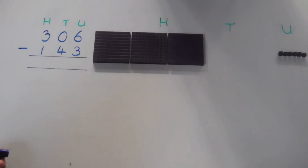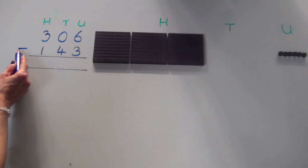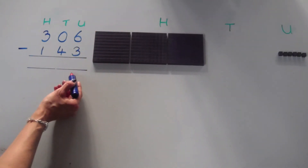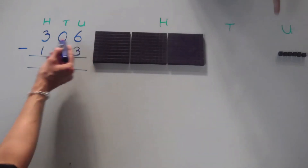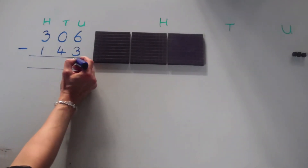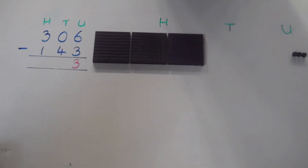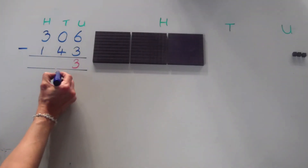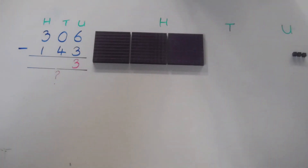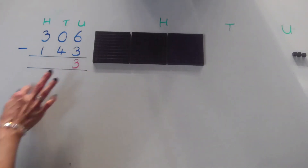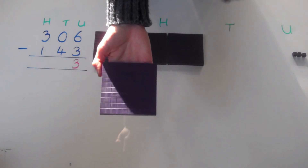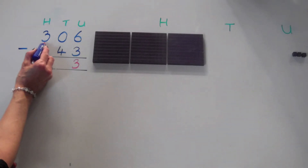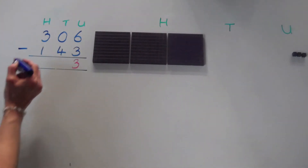Our next calculation is three hundred and six, take away one hundred and forty-three. Starting with the units column: six take away three leaves us with three. Now let's look at the tens column — we've got zero tens and we have to take away four tens. How can we take away four from zero? This is where we need to remember that we can exchange a hundred for ten tens.